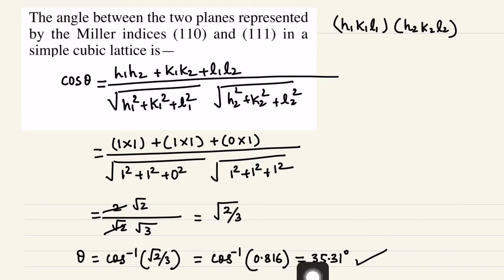So this is the angle between the two planes whose Miller indices are 110 and 111. That's all, thank you.